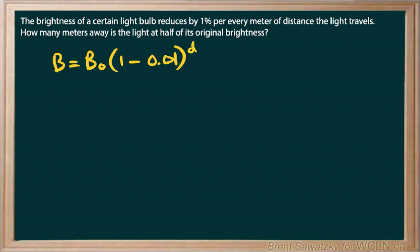So d for every meter that we move away from it, so d in meters. Moving on, we could clean this up and just say 99% of the previous value for every meter.